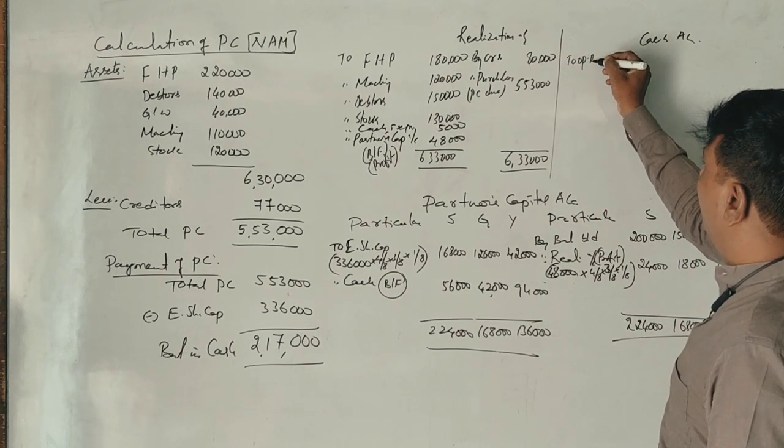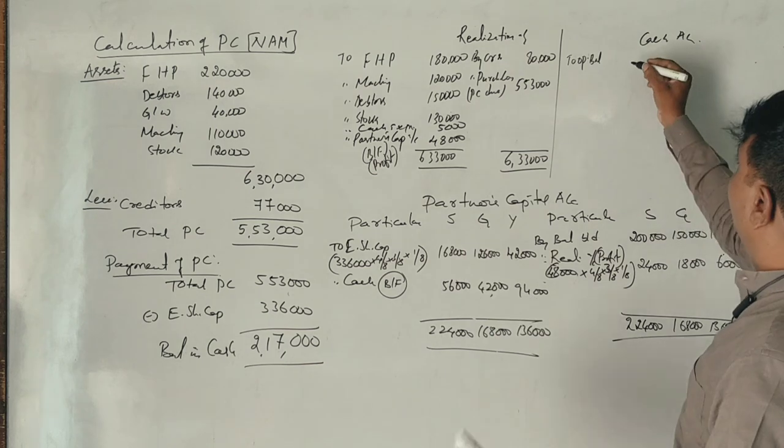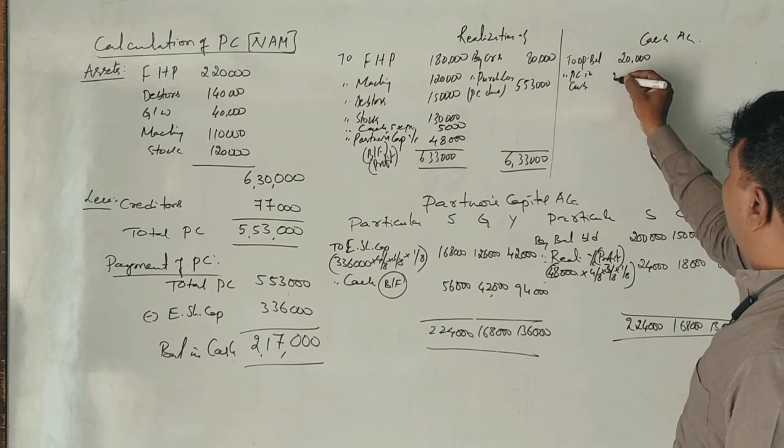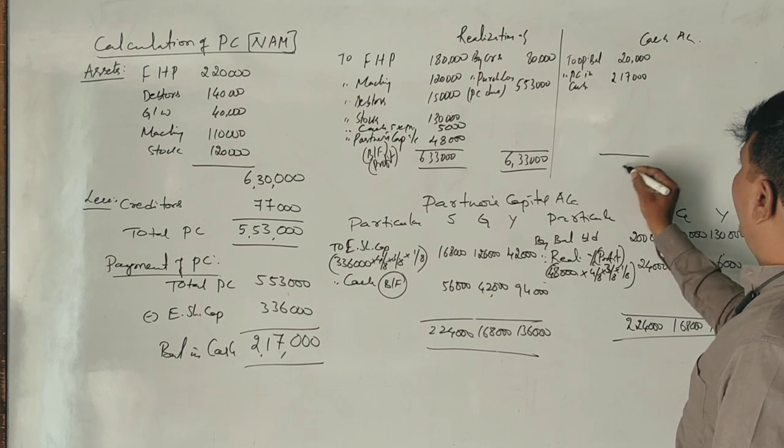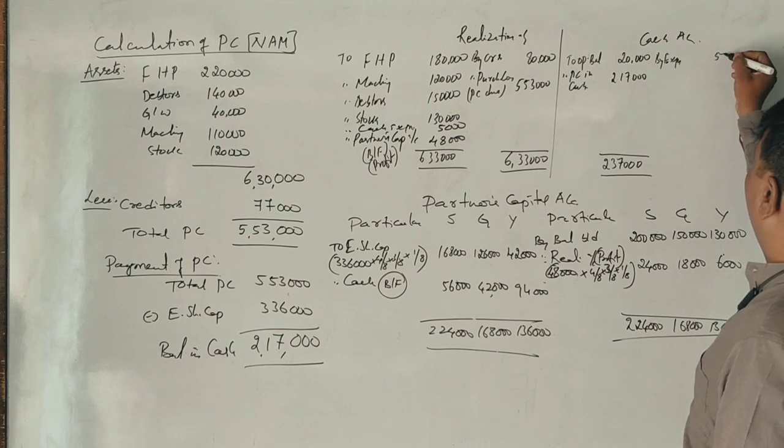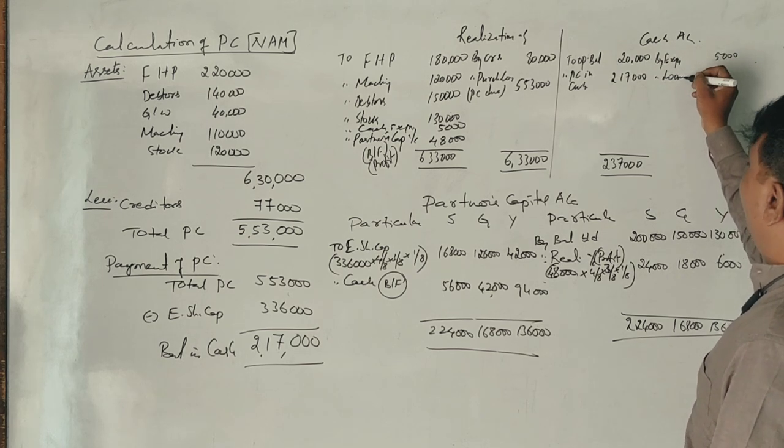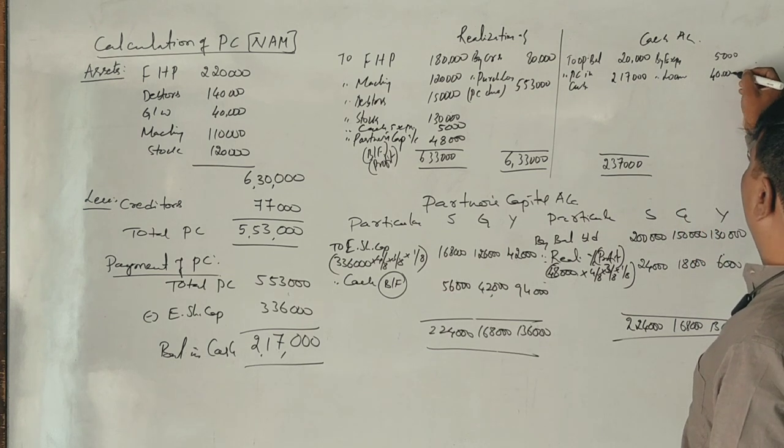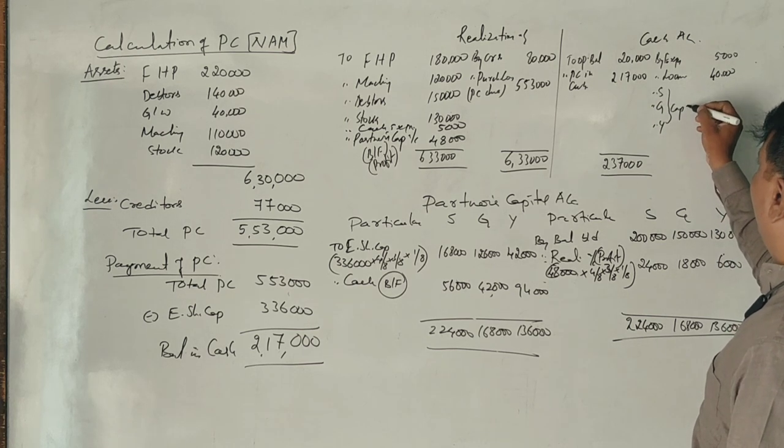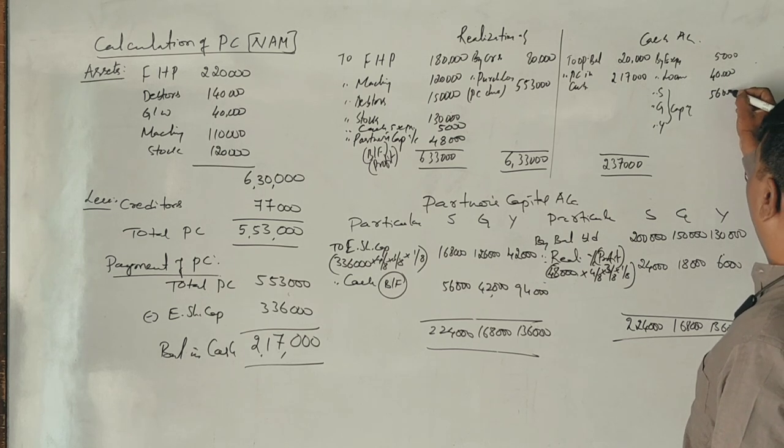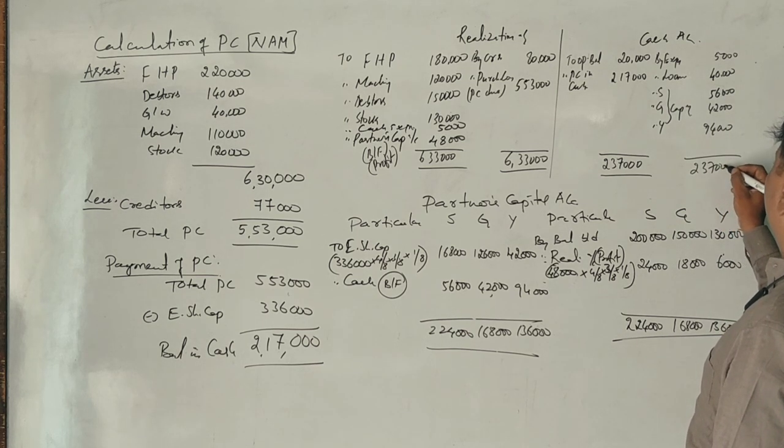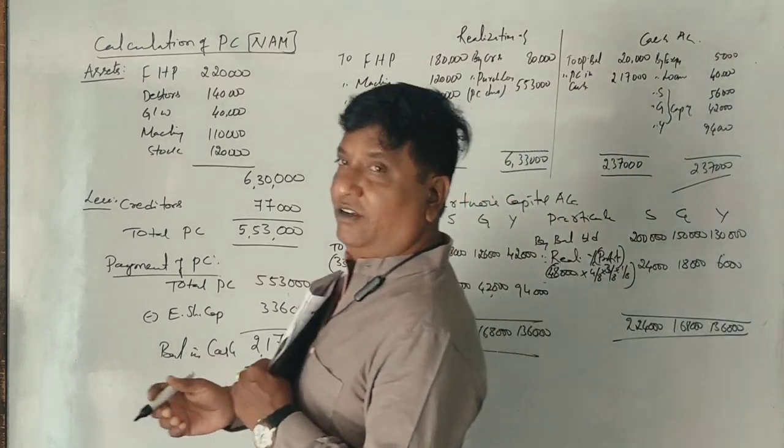The cash account shows opening balance of 20,000. The cash from the company is 2,17,000, totaling 2,37,000. After distributing the amounts to partners, the cash account is complete.